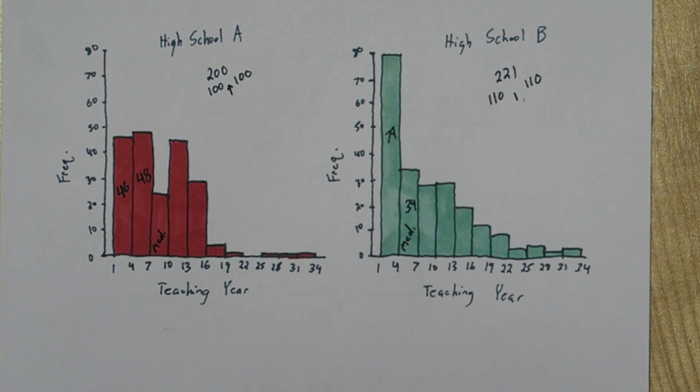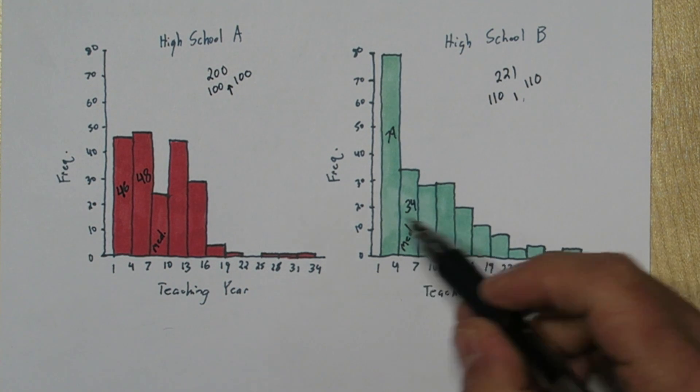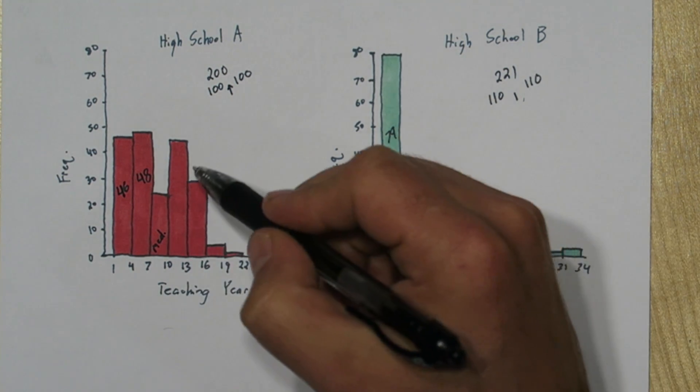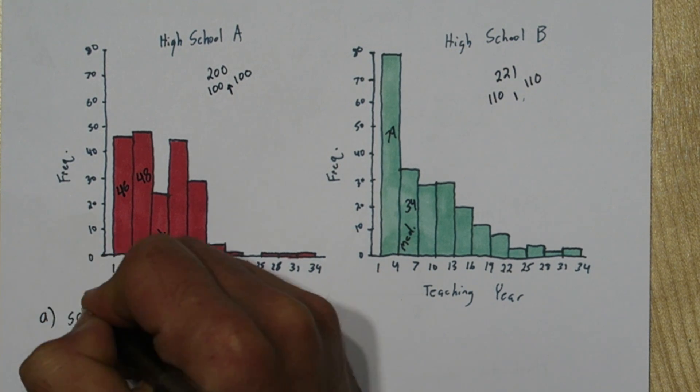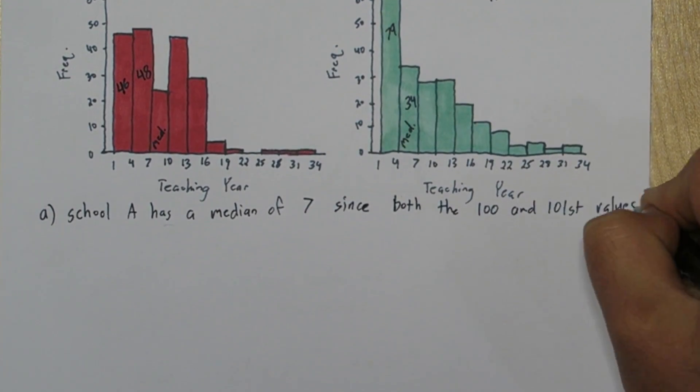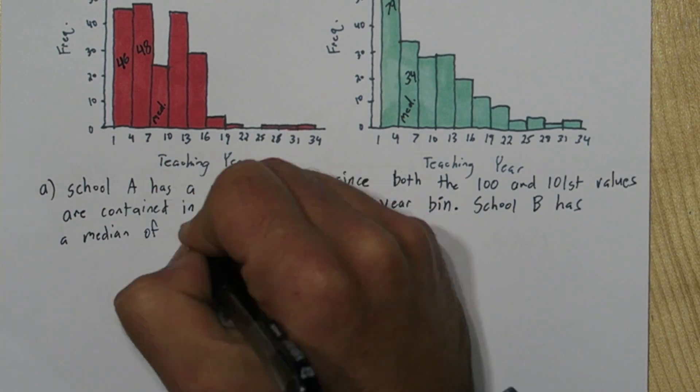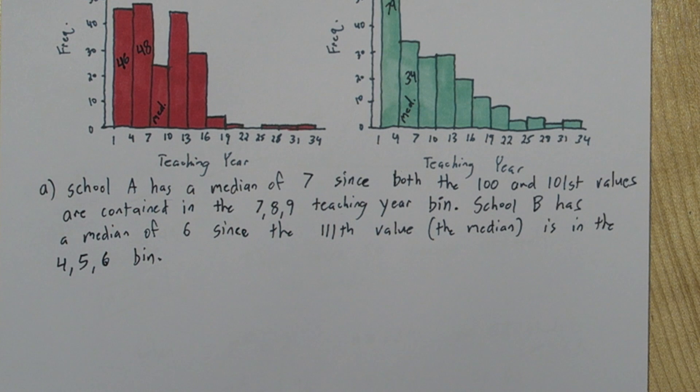Since one of the medians is 6 and one is 7, the median of 6 has to be in this bar, which goes from 4 up to 6. This right here goes from 7 up to 9. So school A must have the median of 7, and school B must have the median of 6. So we'll say school A has a median of 7, since both the 100th and 101st values are contained in the 7, 8, 9 teaching year bin. And school B has a median of 6, since the 111th value, which is actually the median, is in the 4, 5, 6 bin.